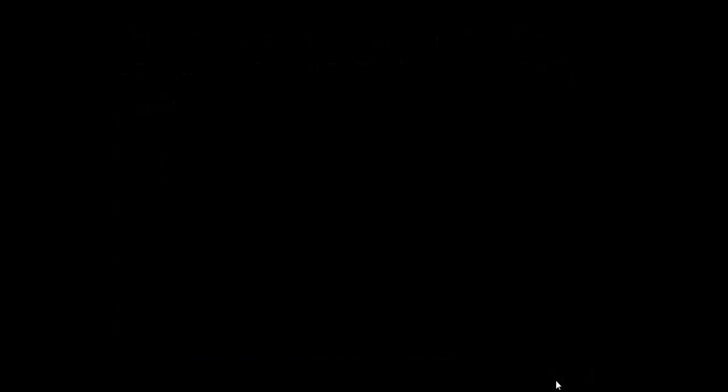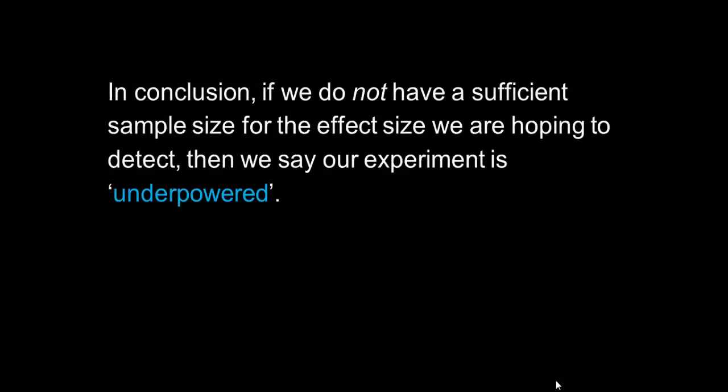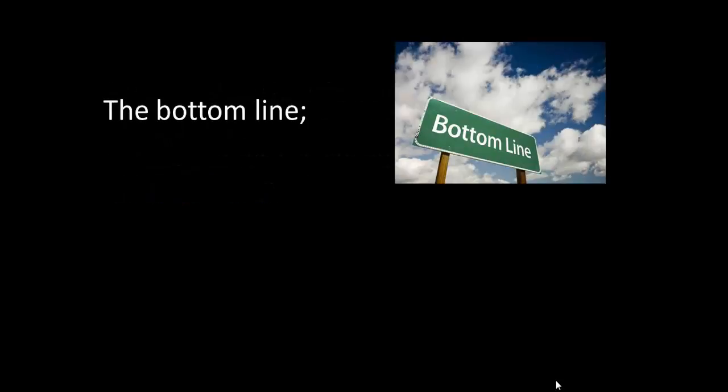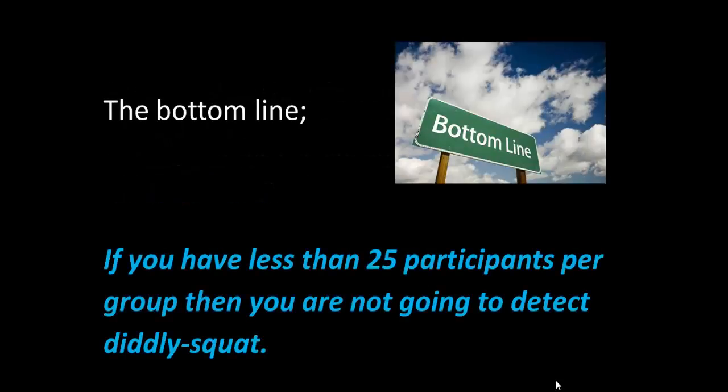In conclusion, if we do not have a sufficient sample size for the effect size we're hoping to detect, then we say our experiment is underpowered. So the bottom line is, if you've got less than 25 participants per group, then you're not going to detect diddly squat. Thank you and happy sampling.